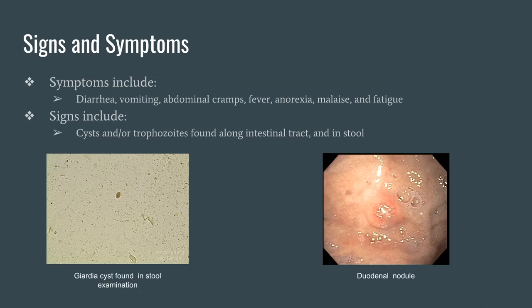Some of the most common signs of Giardia are severe diarrhea, vomiting, abdominal cramps, and fever. This can be accompanied by anorexia, malaise, and fatigue. The parasite can cause chronic atrophic gastritis — the loss of glands in the stomach causing inflammation — and duodenal nodules as well.